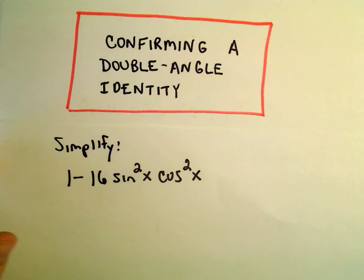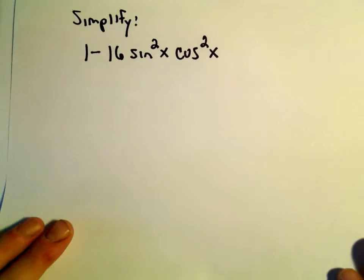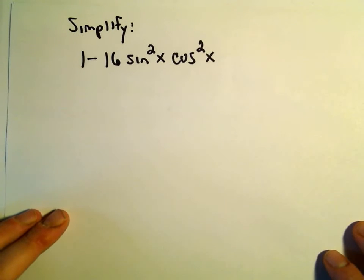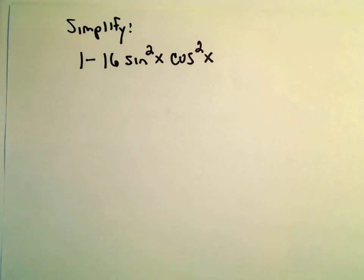Okay, so here we're going to use our double angle identity to simplify down this expression: 1 minus 16 sine squared x times cosine squared x.